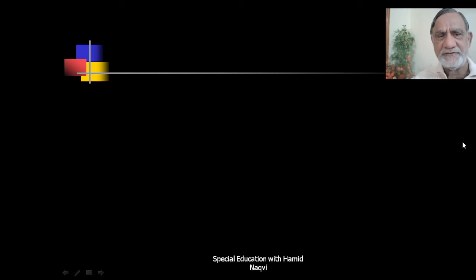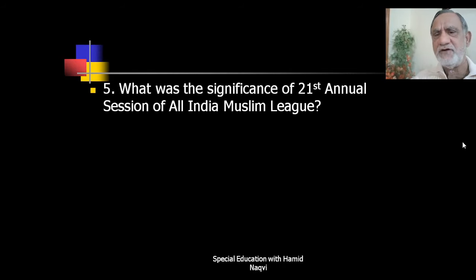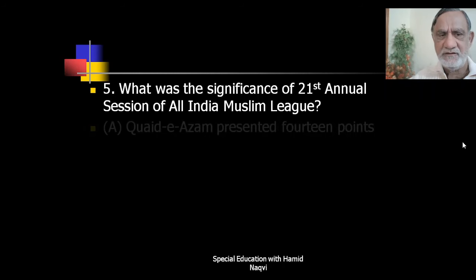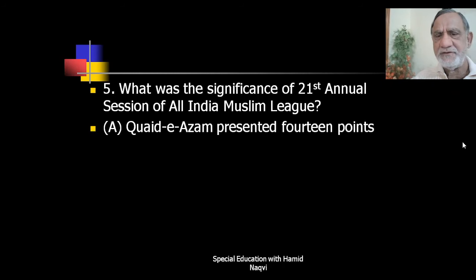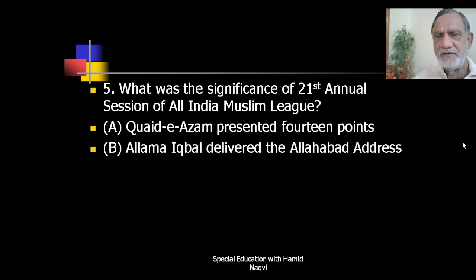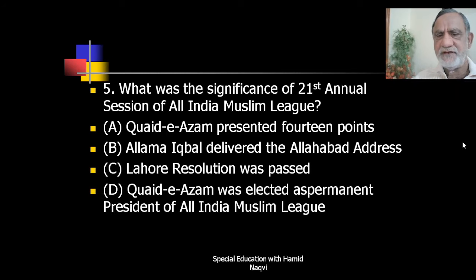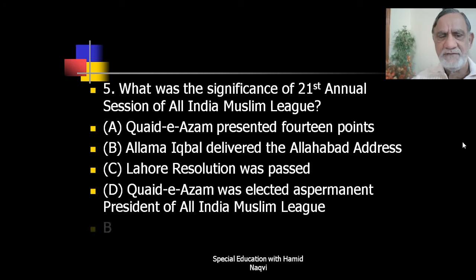Next question: what was the significance of the 21st Annual Session of All India Muslim League? Options: Quaid-e-Azam presented 14 points; Allama Iqbal delivered the Allahabad address; Lahore Resolution was passed; or Quaid-e-Azam was elected as permanent president of All India Muslim League. The correct answer is B — Allama Iqbal delivered the Allahabad address.